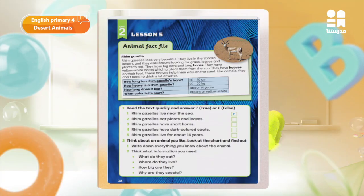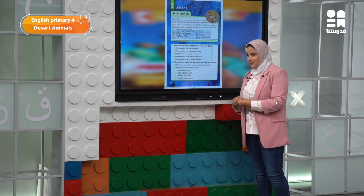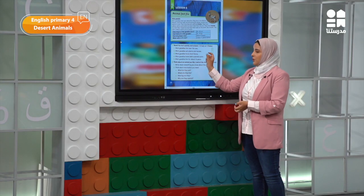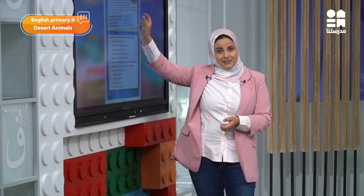Now it's time to answer the true or false questions. Number one: rim gazelles live near the sea. We learned that rim gazelles live in the Sahara desert, so number one is false. Number two: rim gazelles eat plants and leaves. The keyword is 'eat' — going back to the passage, rim gazelles eat plants and leaves. Of course it's true.